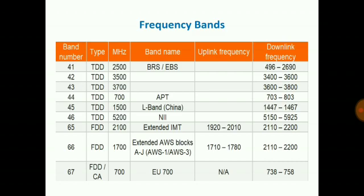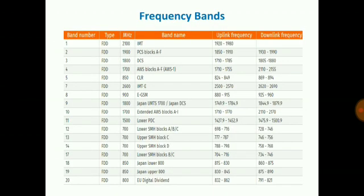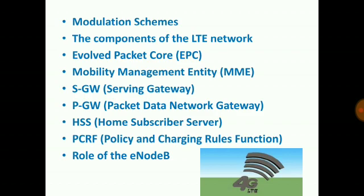LTE networks use bandwidth between 1.4 to 20 MHz. As discussed earlier, the modulation schemes used in LTE network are as follows.